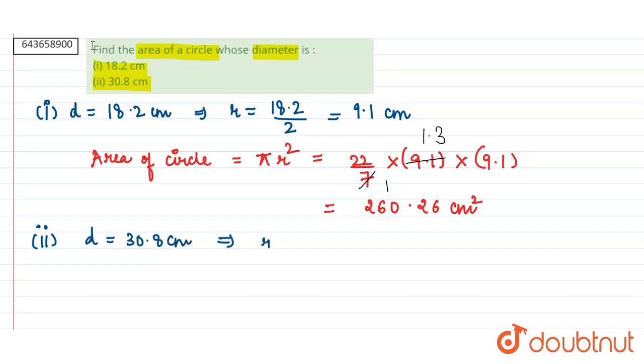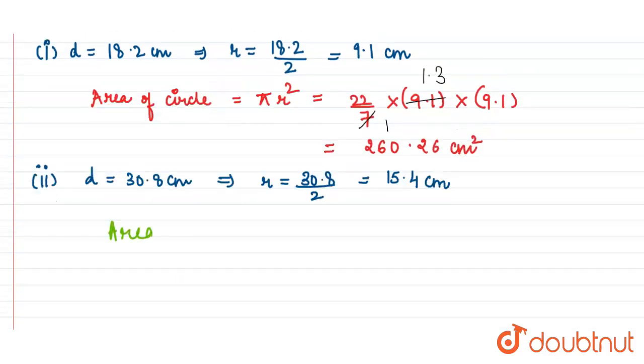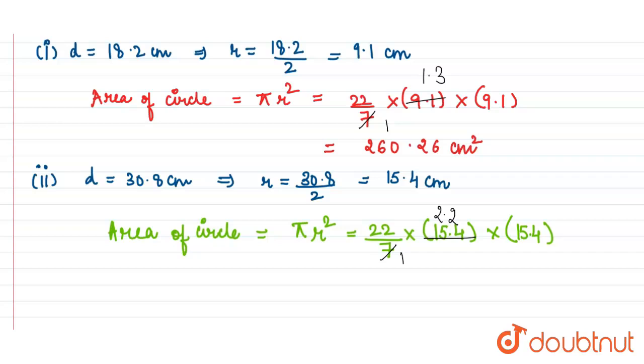In second part, diameter is equal to 30.8 cm, which gives radius equals to 15.4 cm. Area of the circle is equal to π r², that is 22 by 7 into 15.4 into 15.4. 15.4 divided by 7 becomes 2.2, and by multiplying all three terms we get 745.36 cm².